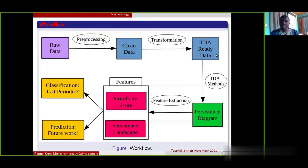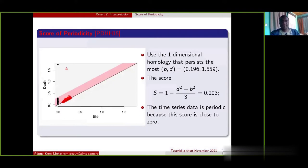When we have our TDA-ready data, which is the point cloud that we presented, we apply our TDA method, which is persistent homology, to have this persistent diagram.